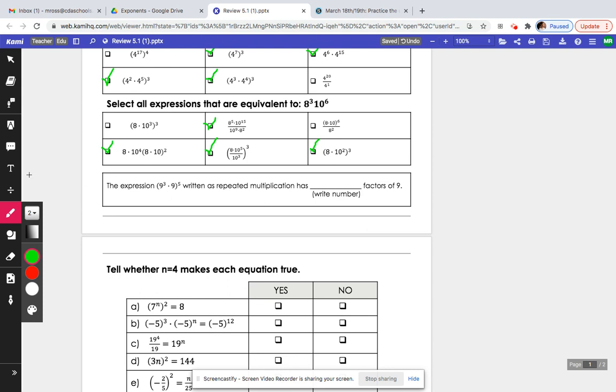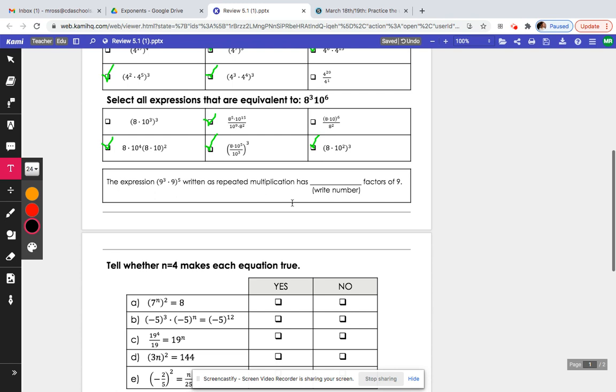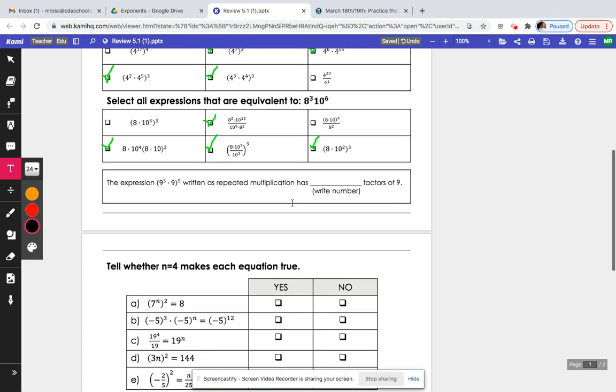Alright, so let's go next. The expression 9 to the third times 9 to the fifth, written as a repeated multiplication, has how many 9s? And so if we have 9 to the, or 3 times 5, that's going to be 15, and then we would end up having 9 to the first times 5, so you would have 9 to the 15 times 9 to the 5, which would end up being 20 nines.